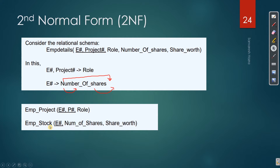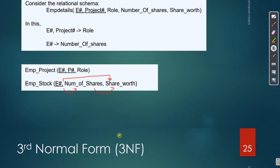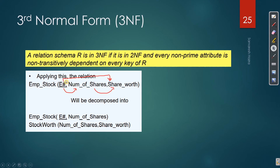But the original relation is in 2NF, however it is not in 3NF. Because there is a transitive dependency here: employee ID gives number of shares, and number of shares gives share OD. So from employee to share OD, that is a transitive dependency. If there is a transitive dependency, it cannot be 3NF.